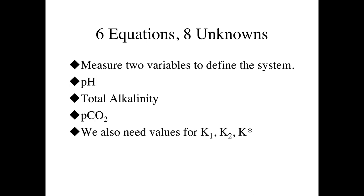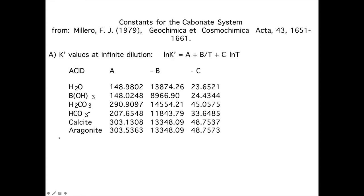These equilibrium constants have been measured experimentally as a function of temperature and salinity, and we can go to tabulated values to calculate them. Here's the reference from a paper by Frank Malero, giving K primes for a series of important acid-base species in environmental systems. The equation ln(K prime) is fit to a function: a plus b divided by T plus c times ln(T), where the a, b, and c coefficients are fitting coefficients with no physical significance but an excellent fit as a function of temperature.